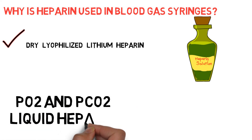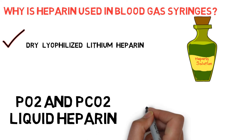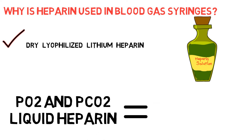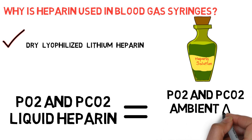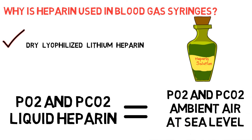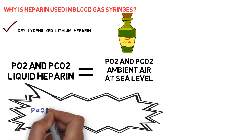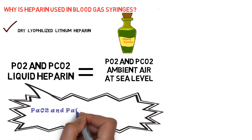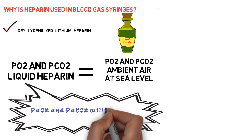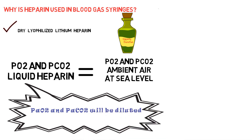The PO2 and PCO2 of liquid heparin are virtually the same as the PO2 and PCO2 of ambient air, which is 150 mmHg and 0 mmHg respectively at sea level. Heparin dilution causes the measured PCO2 of the sample to decrease and the PO2 of the sample to move towards 150 mmHg. The measured PO2 increases if the true value is less than 150 mmHg, and decreases if the true value is more than 150 mmHg.